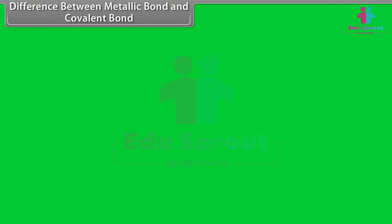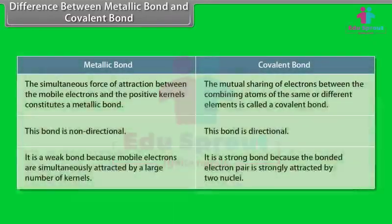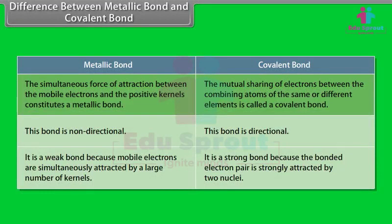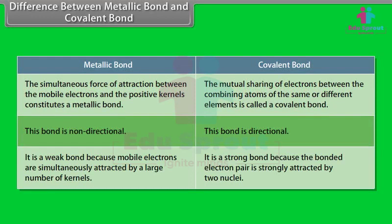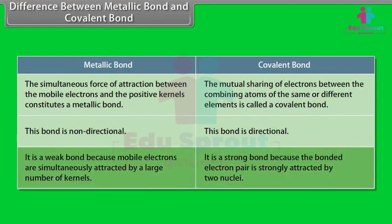The simultaneous force of attraction between mobile electrons and positive kernels constitutes a metallic bond, whereas mutual sharing of electrons between combining atoms is called a covalent bond. Metallic bond is non-directional, whereas covalent bond is directional. Metallic bond is weak because mobile electrons are simultaneously attracted by a large number of kernels, whereas covalent bond is strong because the bonded electron pair is strongly attracted by two nuclei.